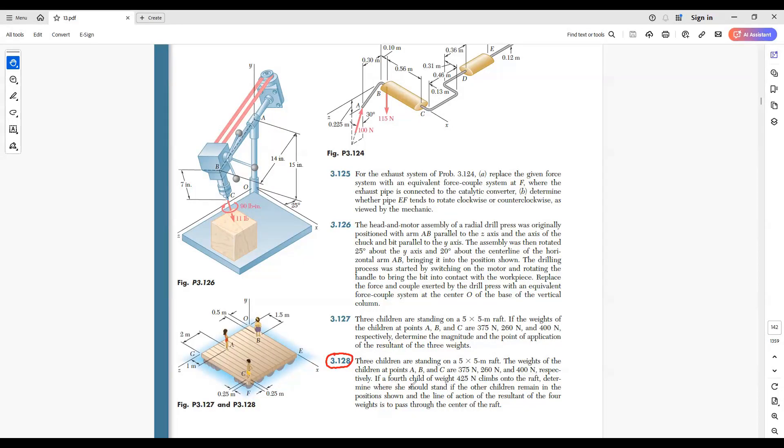If a fourth child of weight 425 newton climbs onto the raft, determine where she should stand. If the other children remain in the positions shown in this figure, and the line of action of the resultant of the four weights is to pass through the center of the raft.